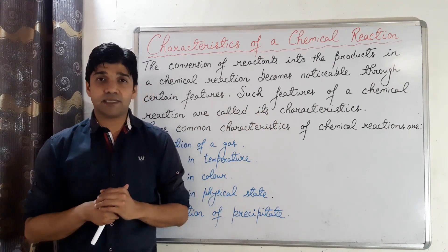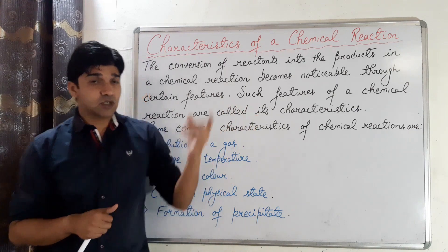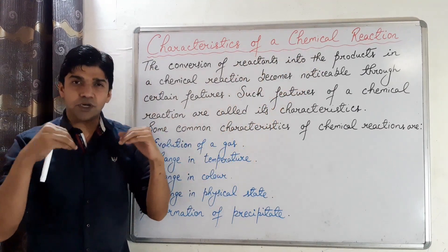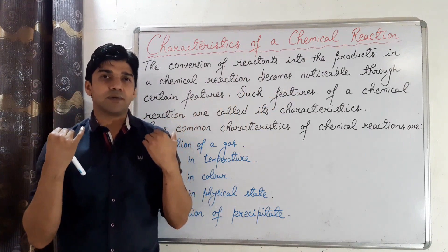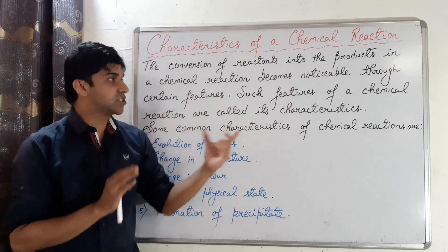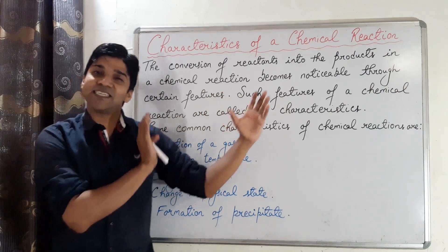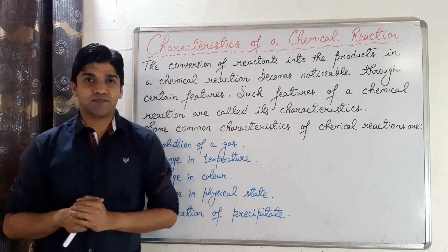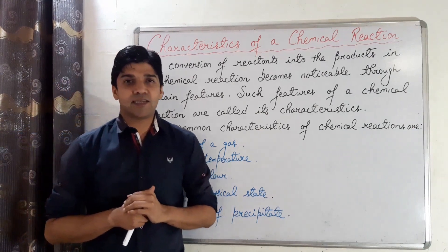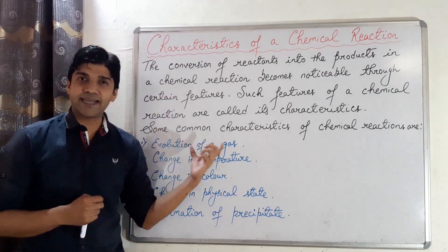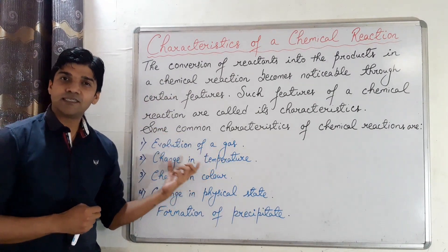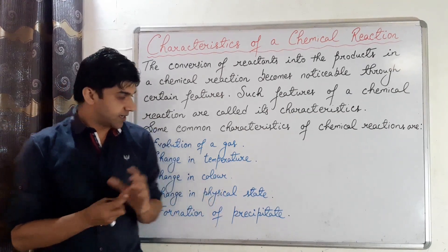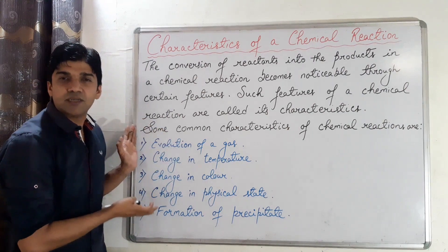Reactants are the substances which participate in a chemical reaction, and products are the substances which are formed. This conversion of reactants into products becomes noticeable through certain observable features, and such features are called the characteristics of a chemical reaction. The five characteristics we will study are: evolution of a gas, change in temperature, change in color, change in physical state, and formation of a precipitate.